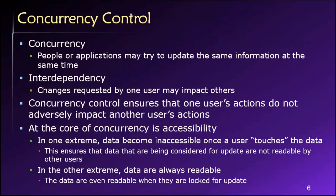I'll begin by talking about concurrency. When two things are happening concurrently, it means that they're happening at the same time. So when we talk about concurrency in the context of a database processing environment, what we're talking about is more than one user trying to access, use, change, update, or delete the same data in the database at the same time.